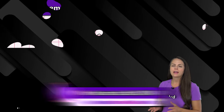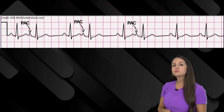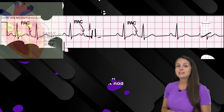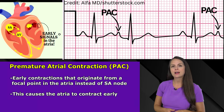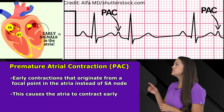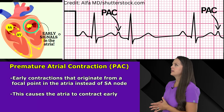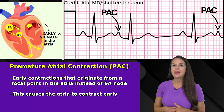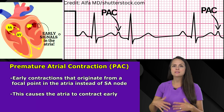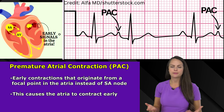Let's go over premature atrial contractions. These are sometimes referred to as PACs, and they're early contractions that originate from a focal point in the atria rather than the SA node. This causes the atria to contract early.